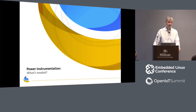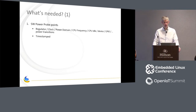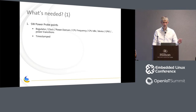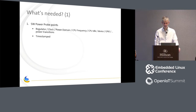If we want to enable power instrumentation, what do we need? First, we need software power probe points — something in the kernel that will notify us whenever there is a power state transition. This includes regulator transitions, power transitions, clock transitions, power domain, CPU frequency, CPU idle, device state changes, GPIOs — everything related to power management. These events shall be timestamped to be useful.